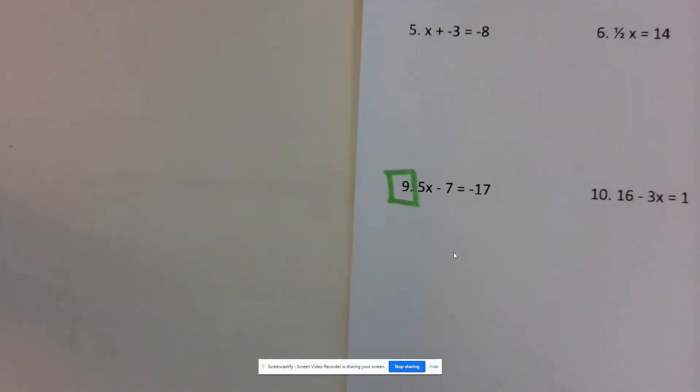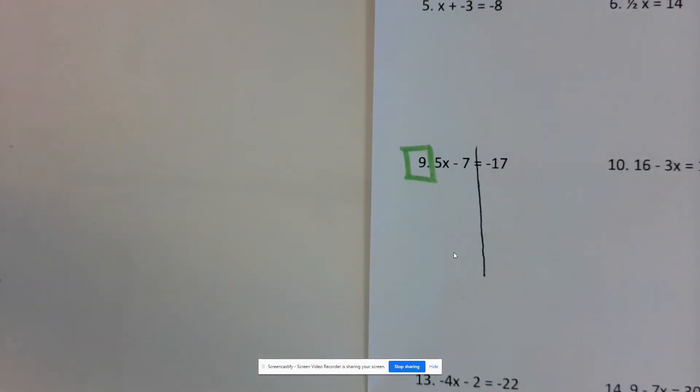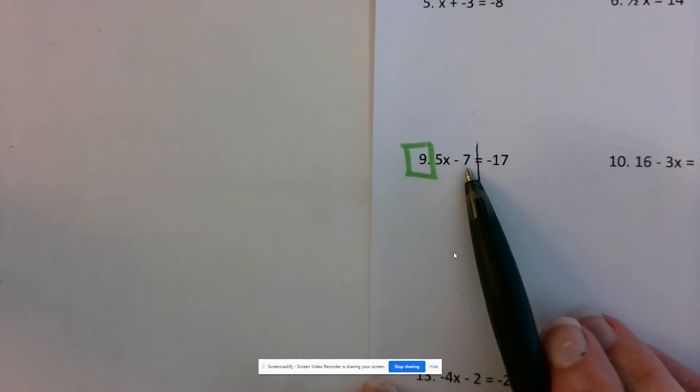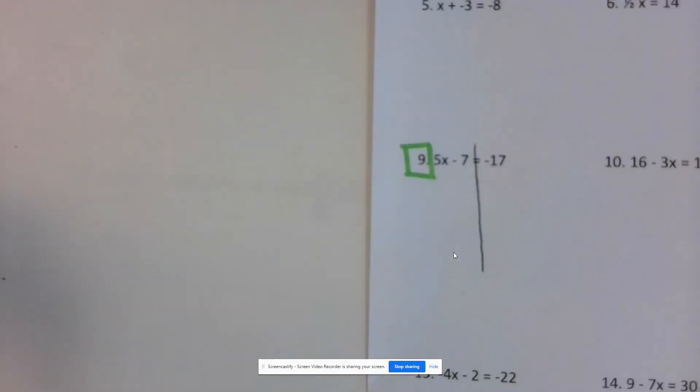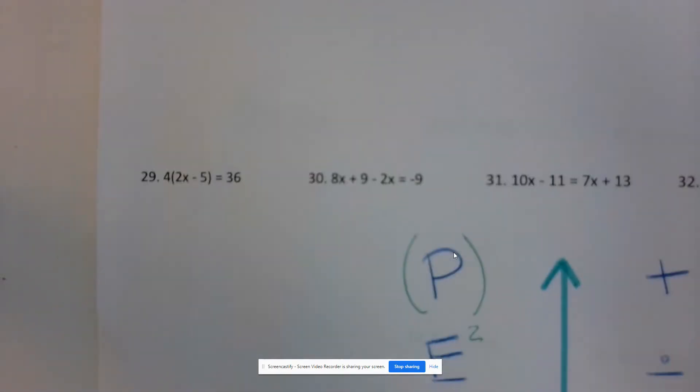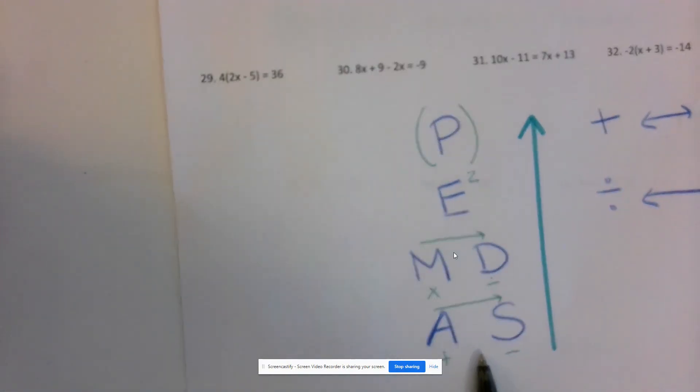Number 9. We're going to solve the equation 5x minus 7 equals negative 17. In this case, I have two numbers that I've got to get rid of that are on the same side as x, the 5 and the minus 7. I'm going to get rid of the minus 7 first, because I do my order of operations backwards. So I'm going to get rid of what's being added or subtracted first.